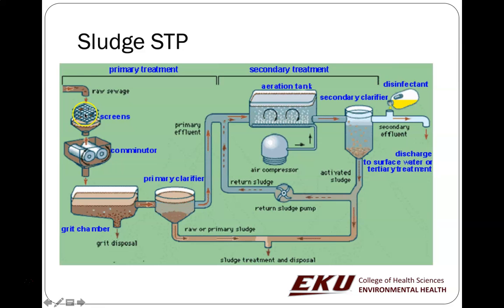Raw sewage comes in and goes through bar screens, which have the nasty job of getting all the plastics and other solids out. Some plants have a comminutor, though Richmond does not. Then the water goes into a grit chamber — no grit is added; grit refers to material like pea gravel, eggshells, seeds like tomato seeds — the heavier, rockier, grittier material. The water spins and that material settles to the bottom.